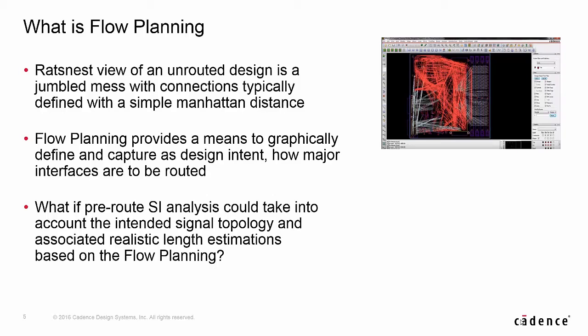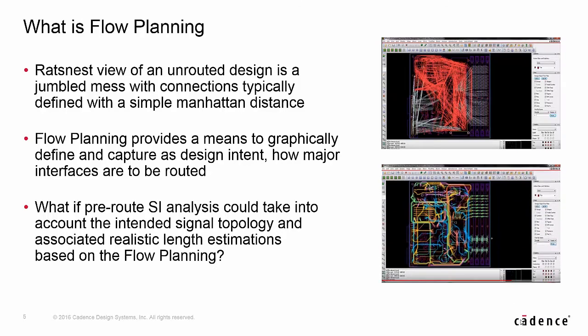Flow planning was recently added to Allegro Sigrity SI, where it allows you to graphically define and capture design intent. This design intent makes sense for major interfaces, but also can be applied to any logic in the design. Here's the same design with flow planning applied. So this makes perfect sense in terms of driving the router, but what if your pre-route SI analysis could leverage the same data? What if the length of your unrouted connections were based on the length of the flow planning guidance? Would this allow you to better optimize your design?